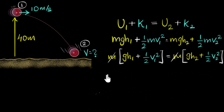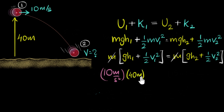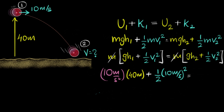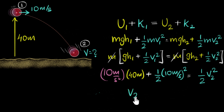Taking G as 10 m/s²: 10 × 40 + ½ × 10² = 0 + ½V₂². That gives us 400 + 50 = ½V₂², so 450 = ½V₂², meaning V₂² = 900. Taking the square root, V₂ = 30 meters per second. The ball hits the ground with a speed of 30 meters per second.